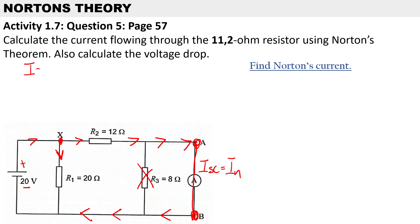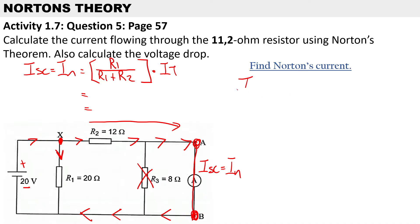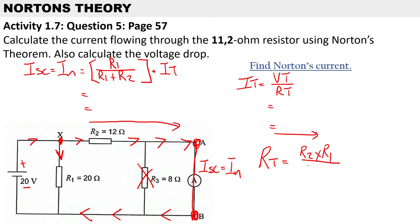When we short circuit the load resistor, the 8 ohm resistor becomes inoperative and we ignore it. To calculate the short circuit current or Norton's current using the current divider rule, we're going to ignore the 8 ohm resistor. So it's going to be R1 over R1 plus R2, multiplied by I total. The resistance total uses the product-sum rule: 20 times 12 over 20 plus 12, giving a resistance total of 7.5 ohms.